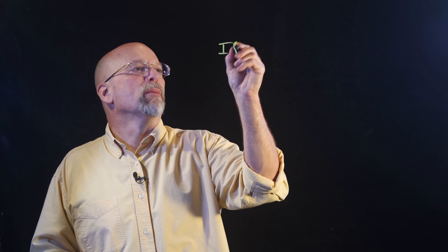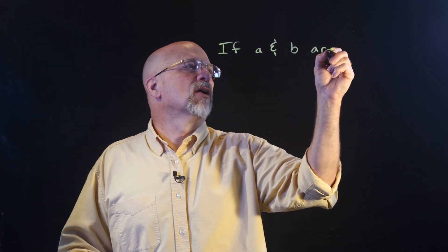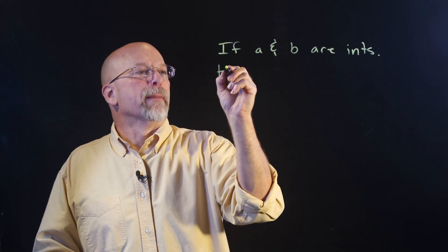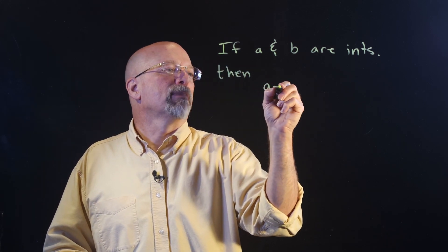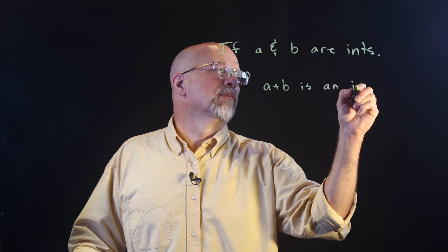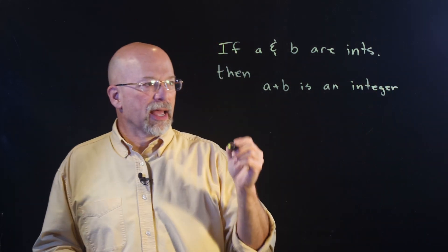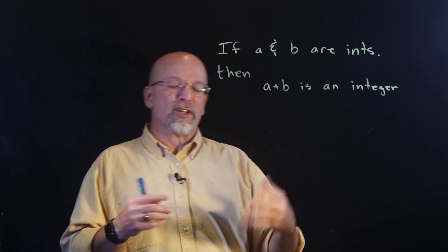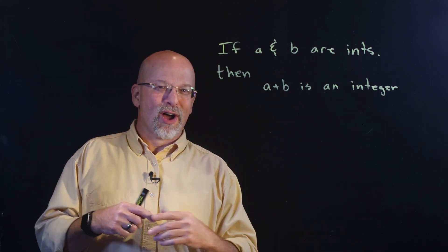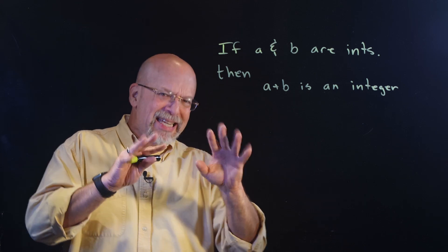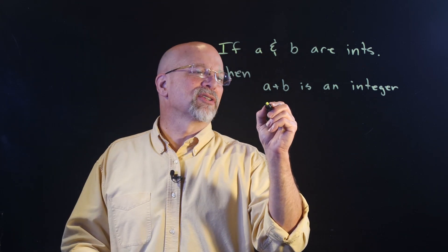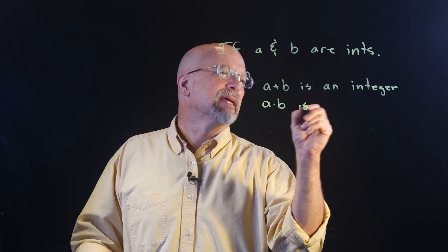We're going to do some proofs, but before we do, we're going to build upon some assumptions. All of us have some mathematical background, and there are ideas we're all pretty comfortable with. For example, let's assume if A and B are integers, then A plus B is an integer — 5 plus 7 is an integer. Somebody proved this long ago because there's an infinite number of integers. We also have: A times B is an integer.